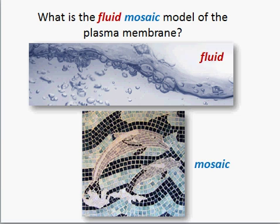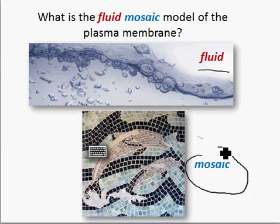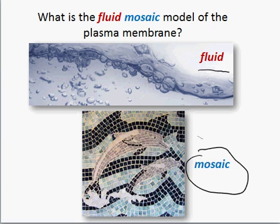When we talk about plasma membranes, we consider this idea of the fluid mosaic model. What that means is that the cell membrane is both fluid, which means it has movement and flexibility, and it's also mosaic, which means it's made up of lots of different parts. Just like a picture is made up of lots of parts, a mosaic, and the water is fluid.